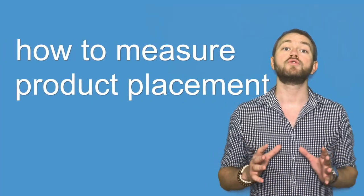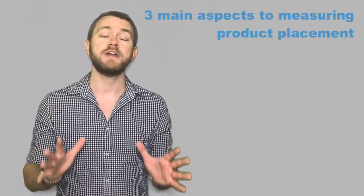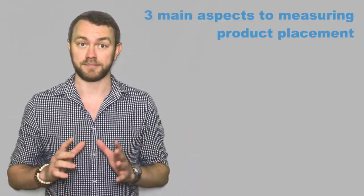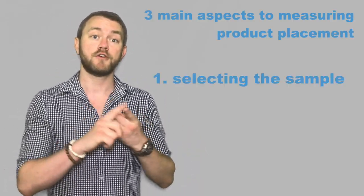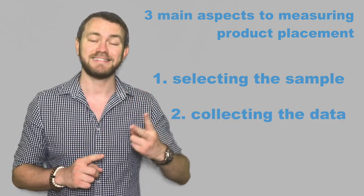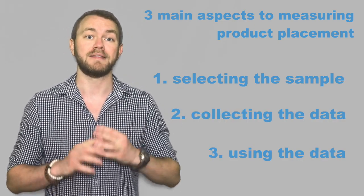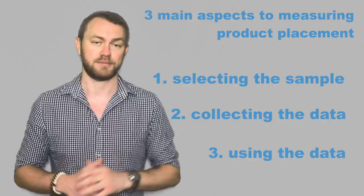Today I'm going to talk to you about how to measure product placement, whether you just want to understand the methodology, want to do it yourself, or want to find a company to do it for you. There are three main aspects to measuring product placement: first selecting the sample, second collecting the right data, and third using that data in the best way possible.